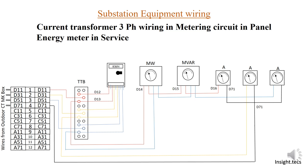Let us understand the importance of the test terminal block. The TTB is useful whenever we want to do the testing of the energy meter, and it is also very useful when we want to work in the panel by removing the energy meter. Now let us understand how the current flows inside this circuit.